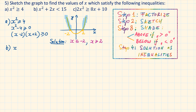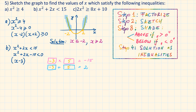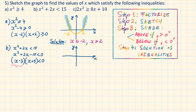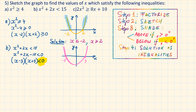Part B: x squared plus 2x less than 15. We subtract 15 from both sides to have everything on one side, then factorize. The graph crosses the x-axis at 3 and minus 5. The symbol less than 0 represents below the graph, so we shade in that area. The solution is x is between minus 5 and 3.